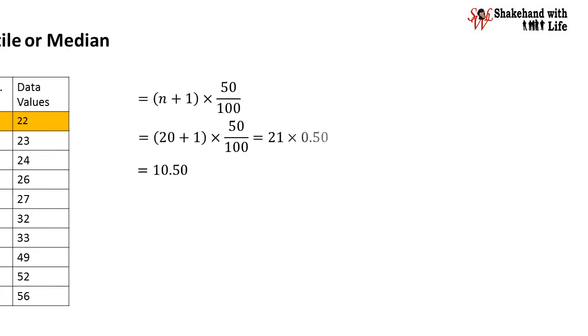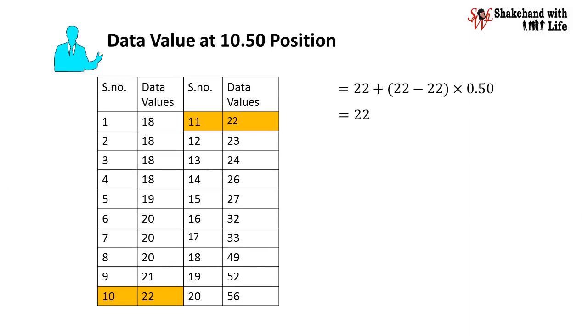Hence the data value at position 10.5, 22 plus 22 minus 22 multiply 0.50 is 22. Thus the 50th percentile or the median of the given data is 22.